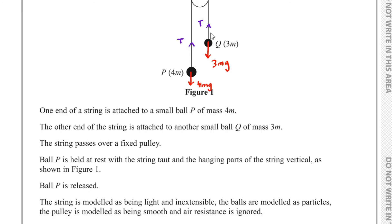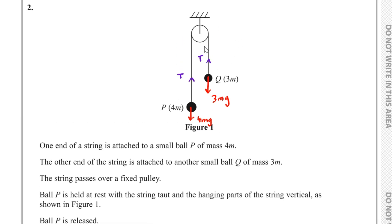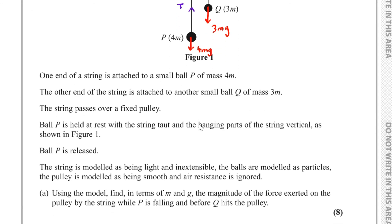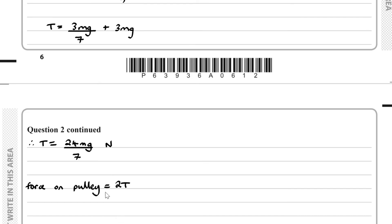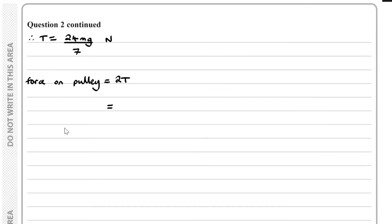To find the force on the pulley: the tension acts on both sides of the string over the pulley, so the force on the pulley equals 2T. Substituting T equals 24mg over 7, we get 2 times 24mg over 7, which equals 48mg over 7 newtons.